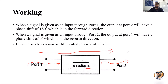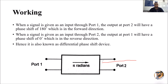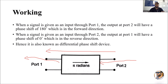Now let us assume the same signal is given as input through port 2 — this is the reverse direction. Whenever a signal is given as input through port 2, the gyrator also produces output through port 1. But in the reverse direction, the signal will experience zero degrees of phase shift. So in reverse direction, the output has zero degree phase shift.